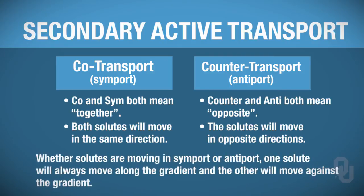Here's a crucial point: we're talking about the general direction the solutes move—do they both move into the cell? The principle that one ion moves along a gradient while the other moves against a gradient still holds. The gradients may be arranged such that both solutes move in the same direction, but one is still going along a gradient and one against. The same applies to countertransport: solutes move in opposite directions, but one still goes along a gradient and the other against.